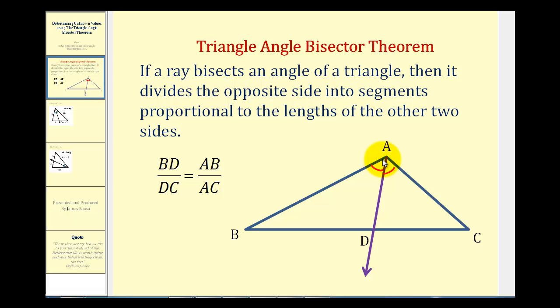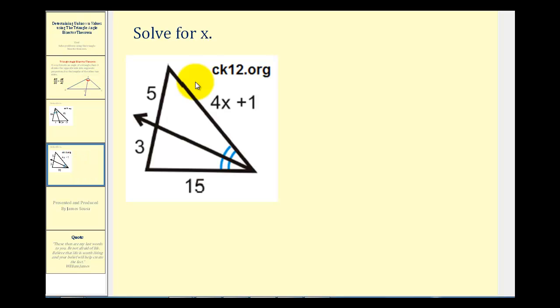And of course this would change based upon which angle is being bisected. Let's take a look at our examples. Here we want to solve for the value of X given that this ray bisects this angle of the triangle.